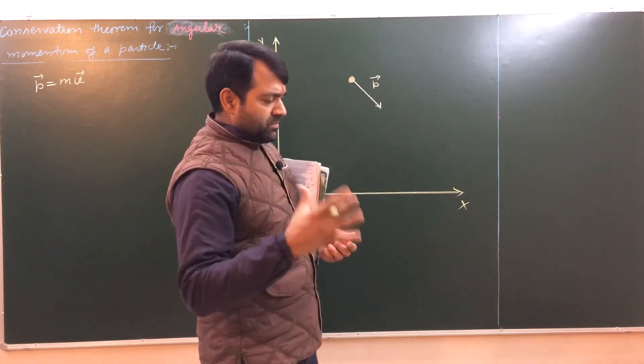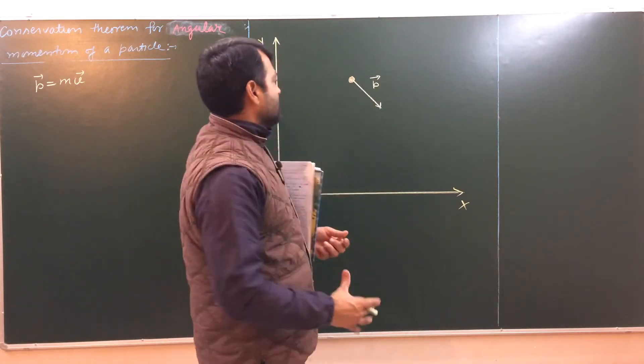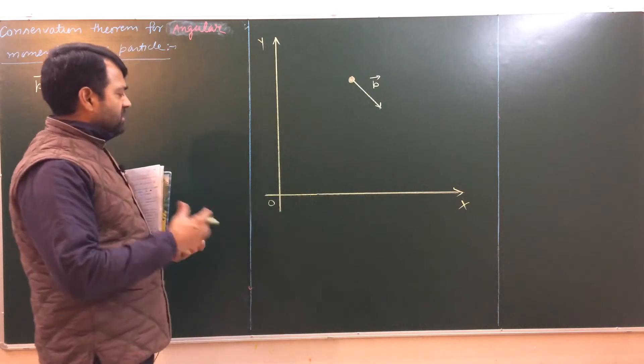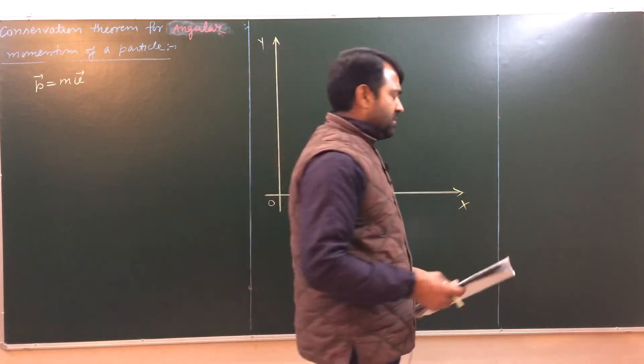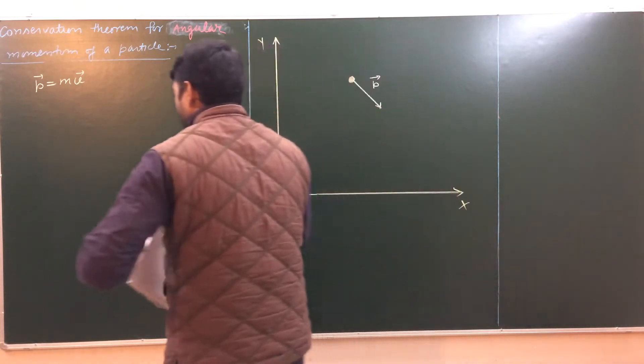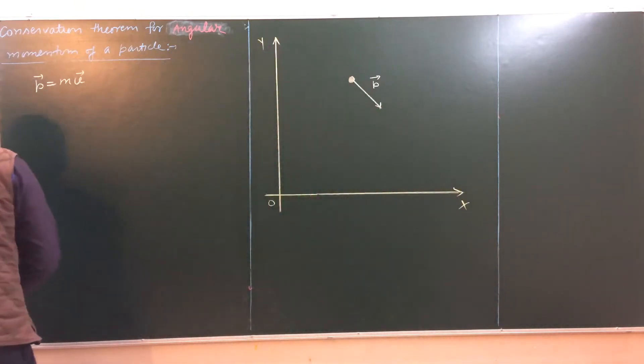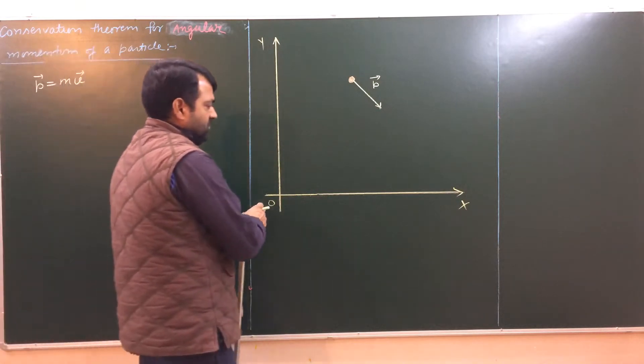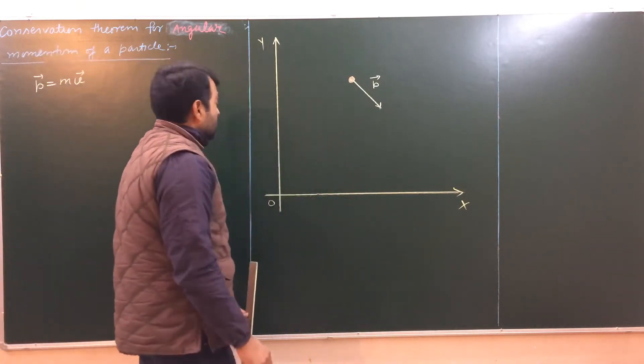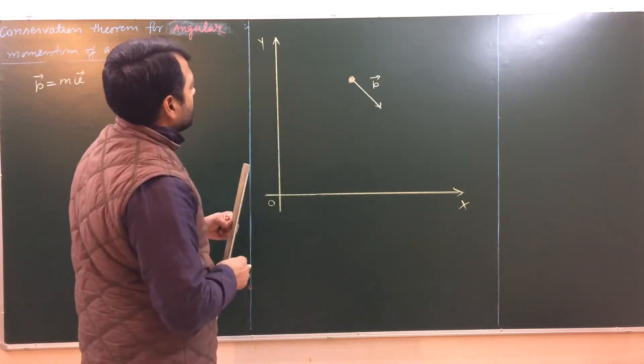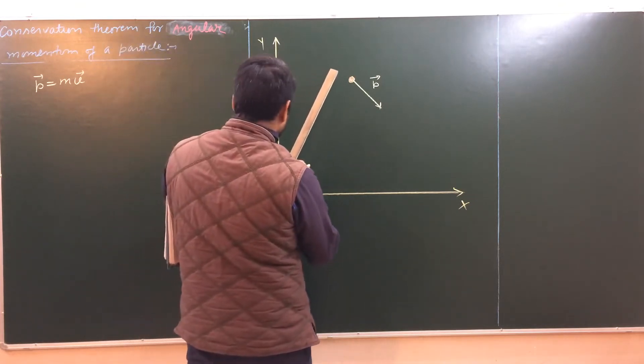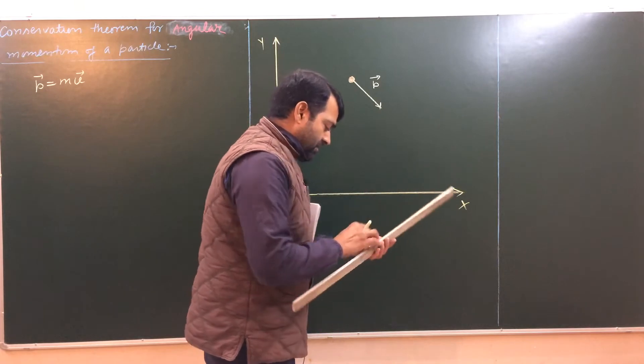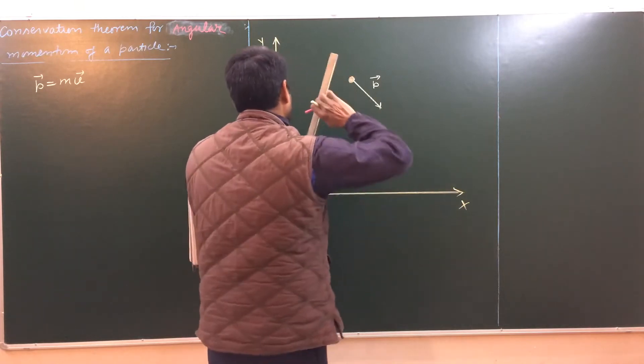As the particle is moving in two-dimensional space, here we can say it is a two-dimensional Euclidean space and we can generalize it into three-dimensional space and we select a point o which is our origin of this right-handed coordinate system. And the position vector of particle which is moving with momentum p is say r.